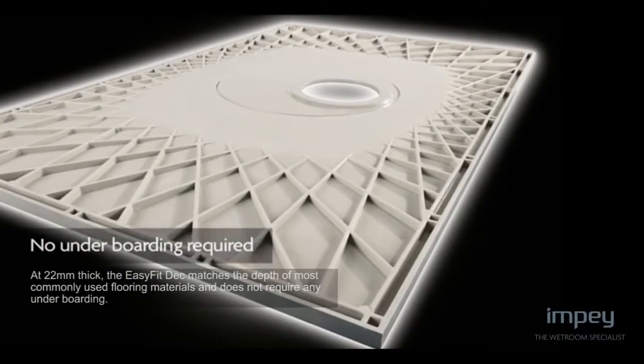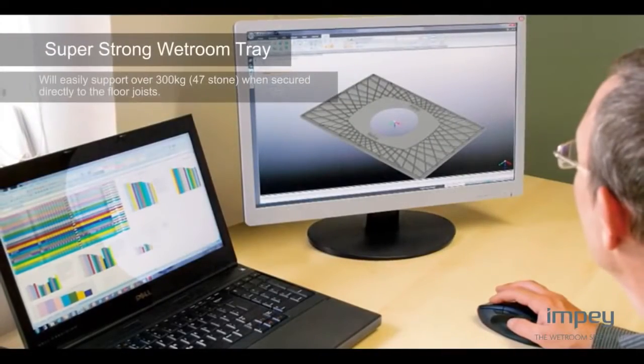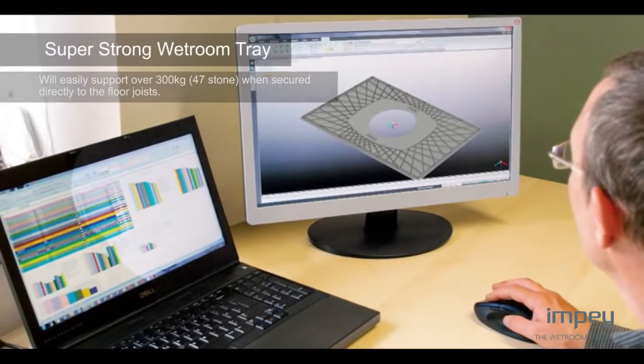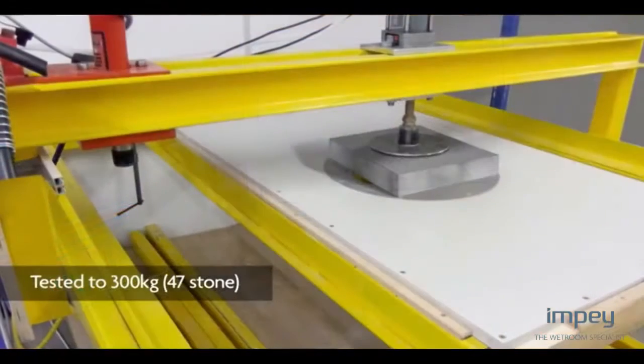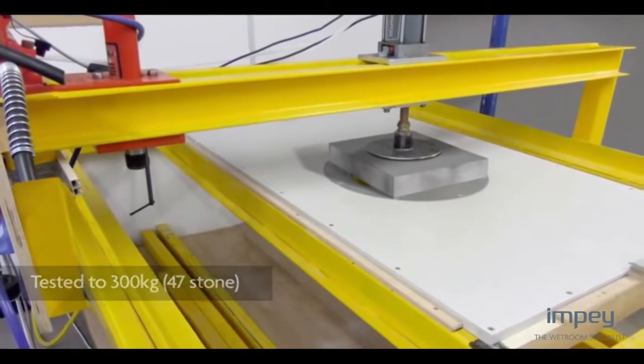Extensive tests have proved that the computer designed cellular structure compression moulded from high glass content SMC can easily support over 300kg, 47 stone, when secured directly to the floor joists.